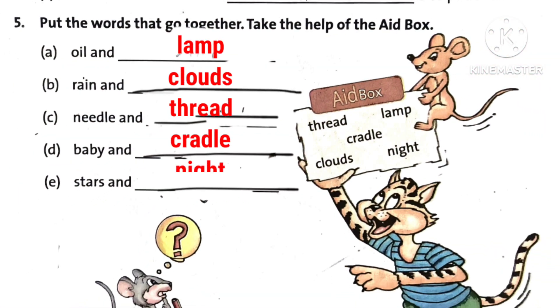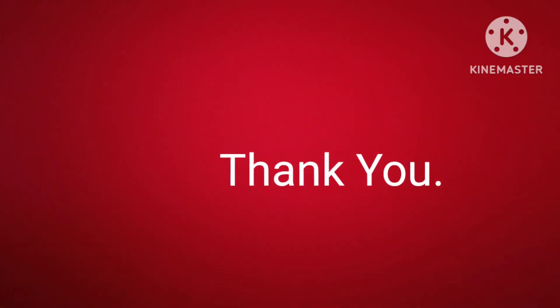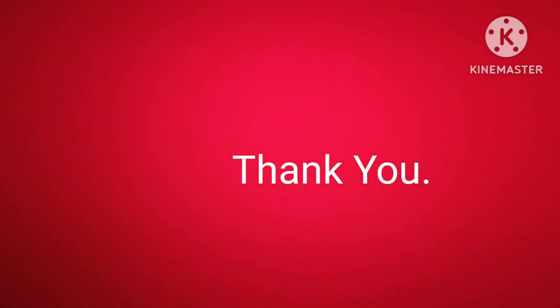Another pair in number 5: oil and lamp, rain and clouds, needle and thread, baby and cradle, stars and night.